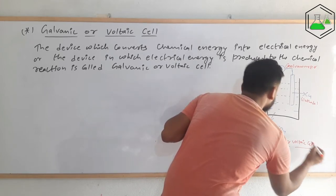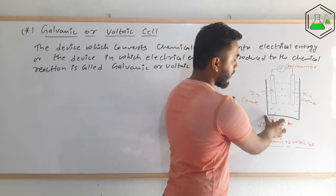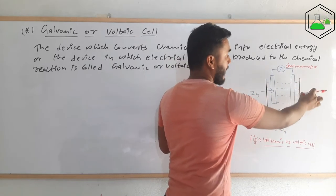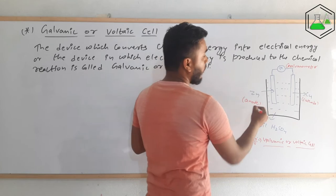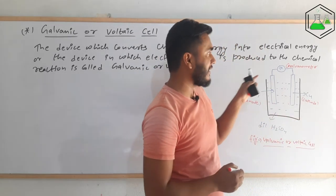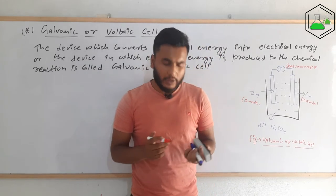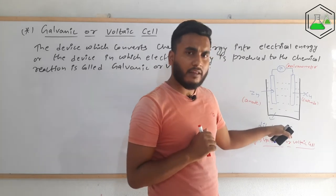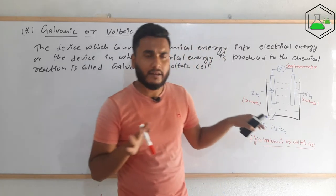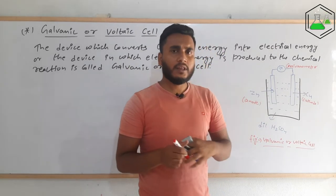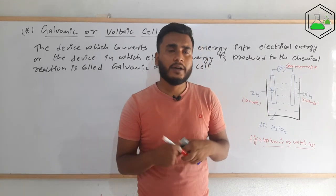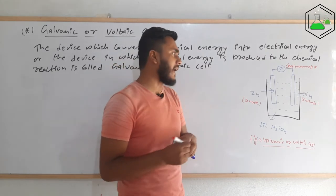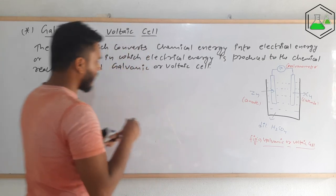In the galvanic cell, a beaker with dilute sulfuric acid was used with zinc and copper electrodes. Zinc behaved as the anode and copper as the cathode. They joined a galvanometer to detect the flow of electric current. A chemical reaction occurred — sulfuric acid broke into H⁺ and SO₄²⁻, ions migrated toward the electrodes, and electrical energy was detected on the galvanometer. However, the device is not frequently used because it has some limitations.